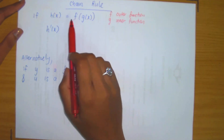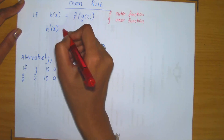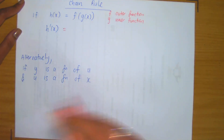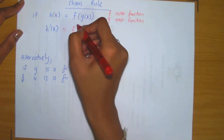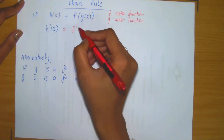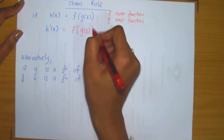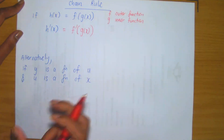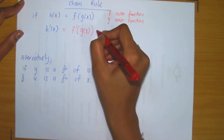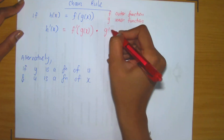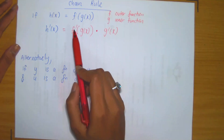If you were required to compute the derivative of the composition of these two functions, the derivative is computed in the following way. It will be the derivative of the outer function — meaning f prime — that is then evaluated at the inner function. You observe what the inner function is and you leave it within the derivative of f, and you then multiply by the derivative of the inner function.